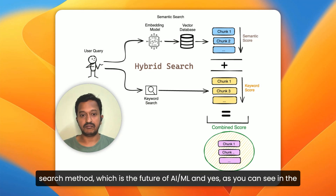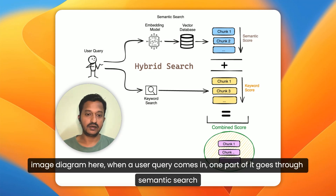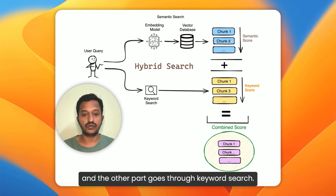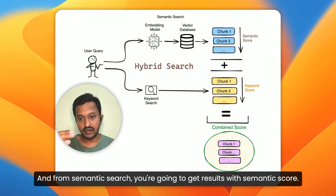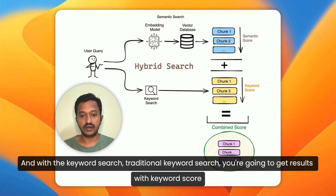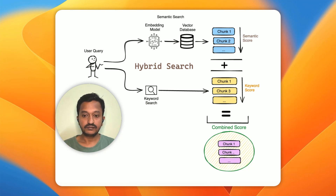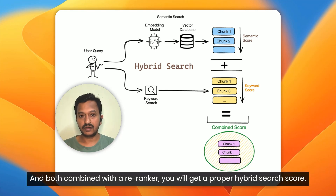As you can see in the image diagram here, when a user query comes in, one part goes through semantic search and the other part goes through keyword search. From semantic search you get results with a semantic score, and from keyword search you get results with a keyword score. Both are combined with a re-ranker to give you a proper hybrid search score.